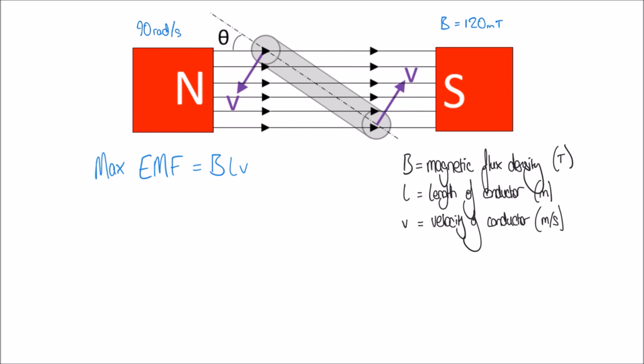Because we're measuring in radians per second, this is an angular velocity, given the symbol omega (ω). Now that we know the rotational speed and magnetic flux density, we also need two more things: the length of the conductor, which is 200 millimeters — so we can imagine this conductor traveling 200 millimeters deep into the page — and the diameter of the armature, which is the distance from one conductor to the other. That diameter d equals 100 millimeters.